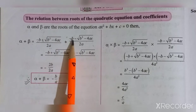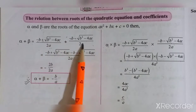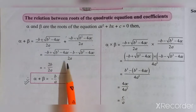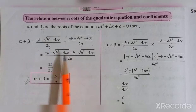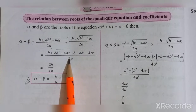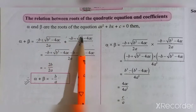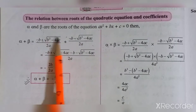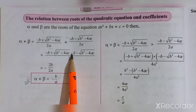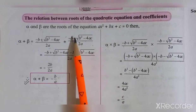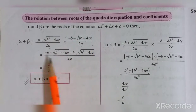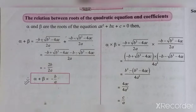When we add alpha plus beta, the denominators are the same, so we take a common denominator. In the numerator we have: minus b plus root(b² minus 4ac), and then plus minus b minus root(b² minus 4ac). We write out the full numerator.